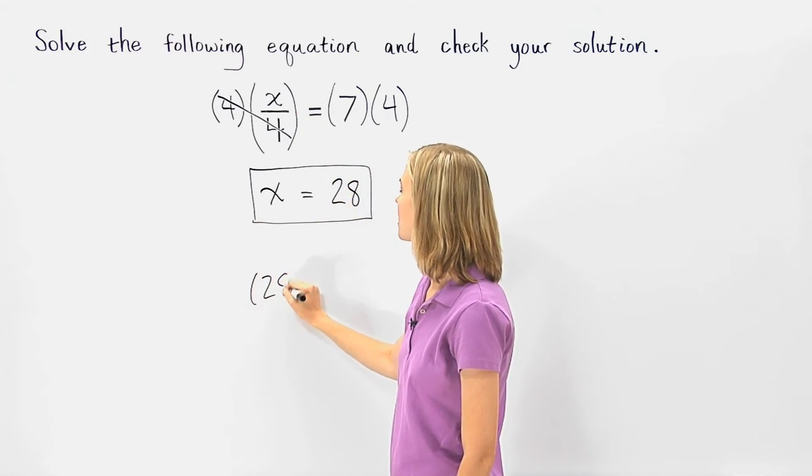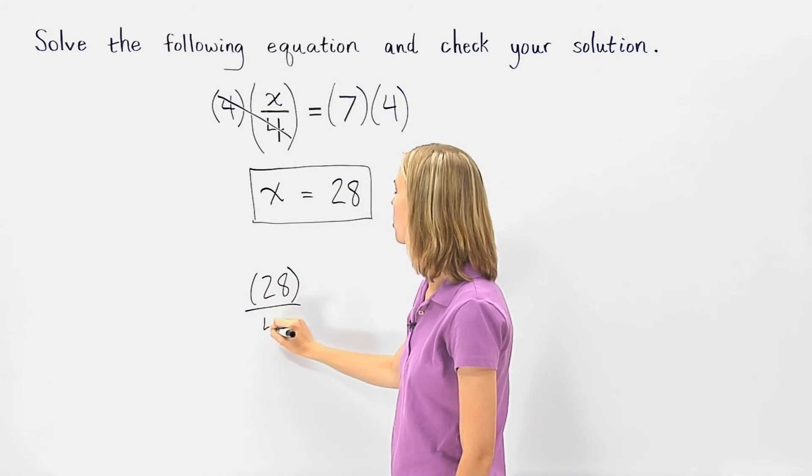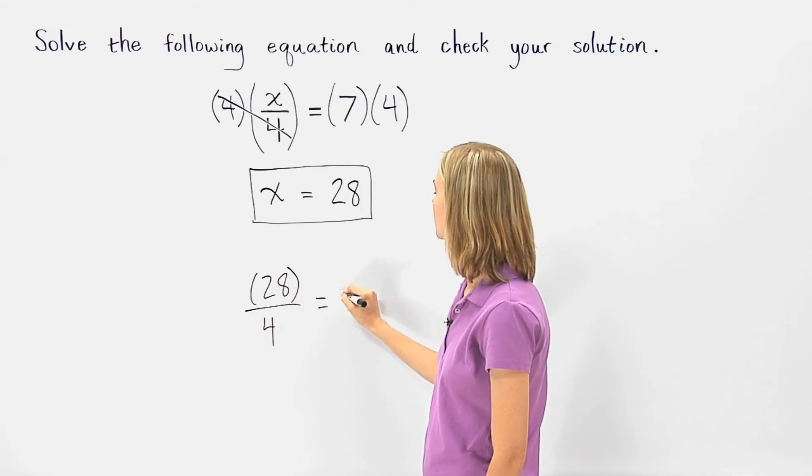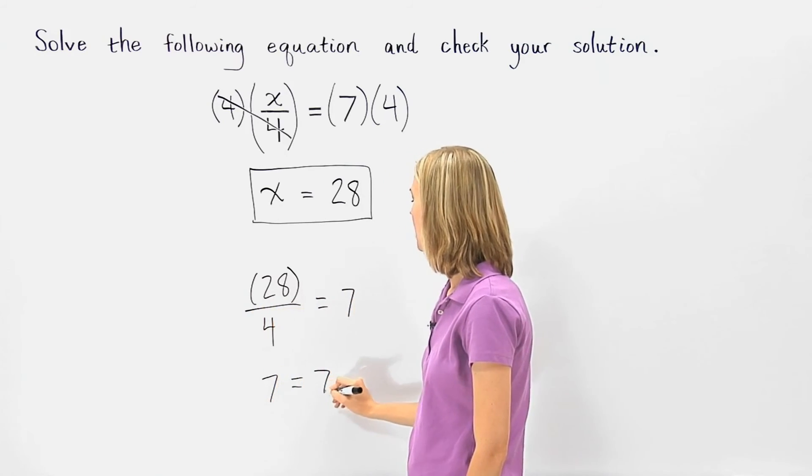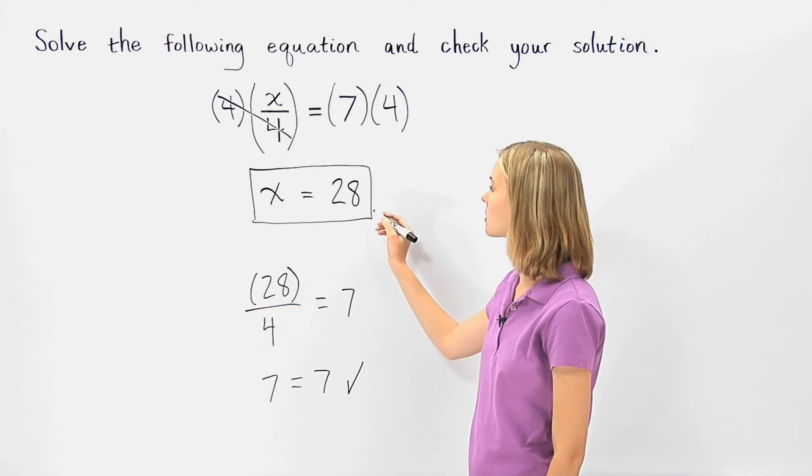So we have 28 divided by 4 equals 7, or 7 equals 7, which is a true statement, so our solution checks.